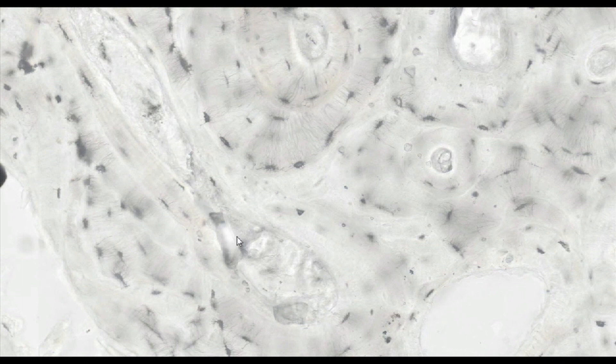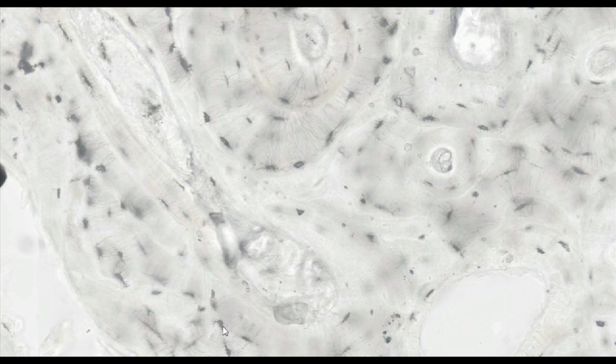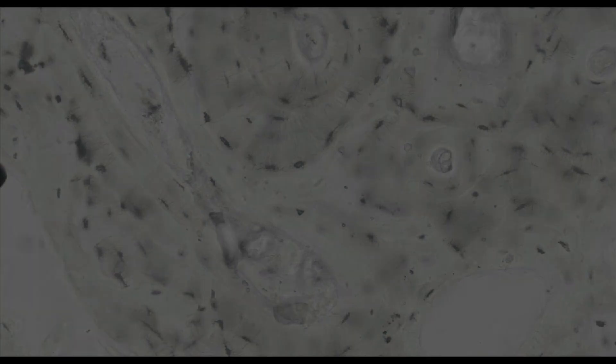Under the periosteum, which is not shown in the specimen, several external basal laminae can be identified. From the side of the bone marrow canal, the bone is surrounded by internal basal laminae.